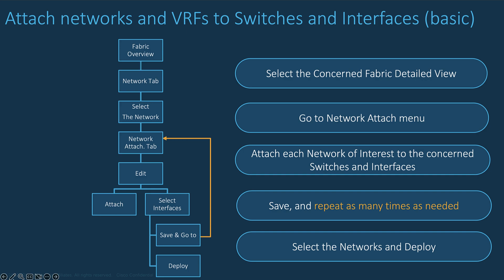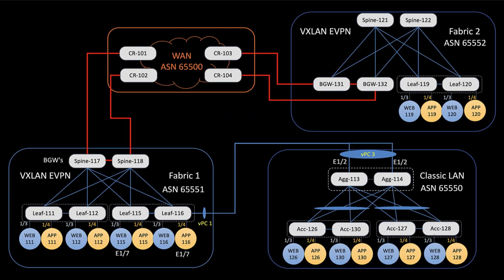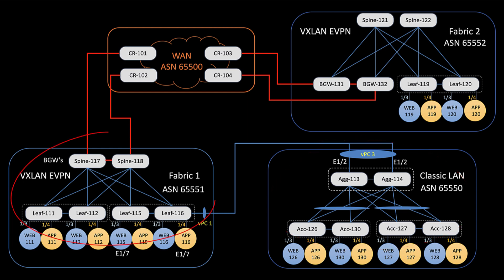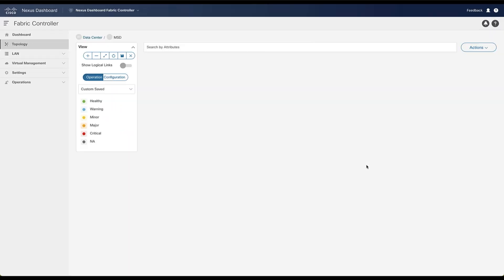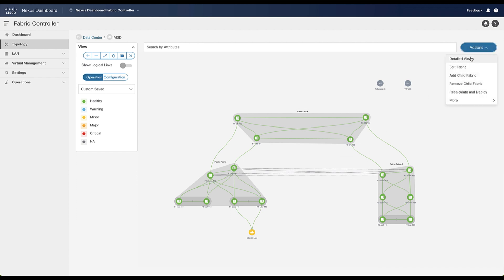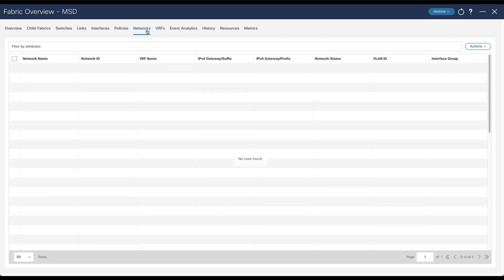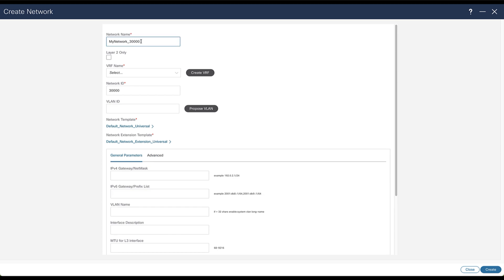As a reminder for the underlay network infrastructure: there is a LAN Classic attached to a pair of VPC leaf nodes from VXLAN EVPN Fabric 1, and a second VXLAN EVPN Fabric 2 interconnected with Fabric 1 using VXLAN EVPN multi-site across a Layer 3 network. The goal of this demo is to create two networks — Web in blue and App in yellow — both routed networks belonging to VRF Tenant 1, and attach them to different switches and interfaces across the three data centers including the classical LAN. Return to the NDFC topology view and enter the MSD scope.